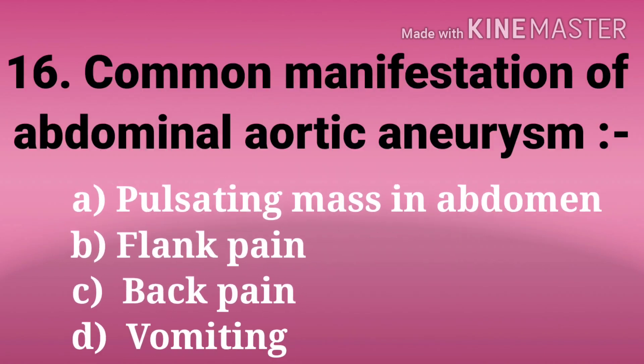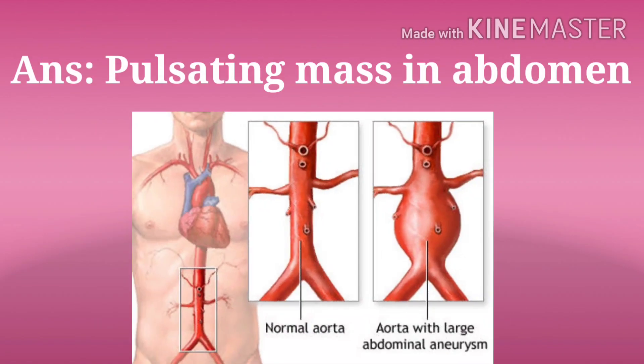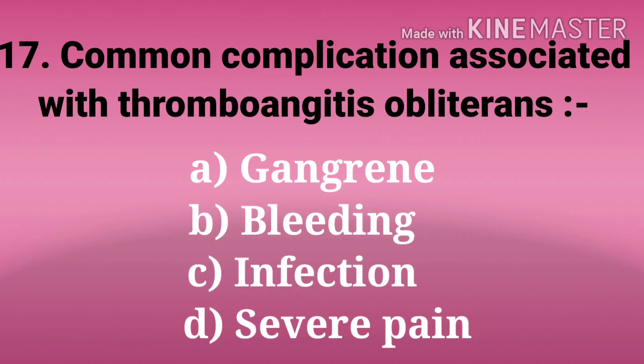Next question: common manifestation of abdominal aortic aneurysm. The options are pulsating mass in abdomen, flank pain, back pain, and vomiting. The answer is pulsating mass in abdomen.